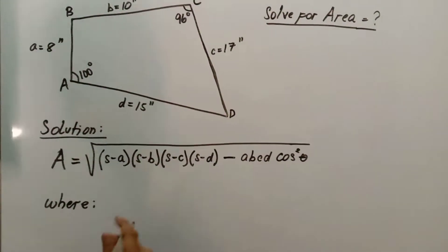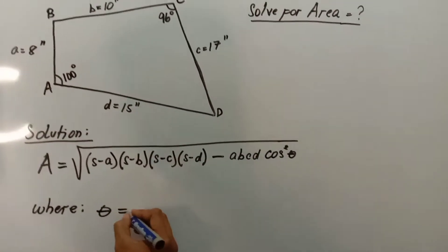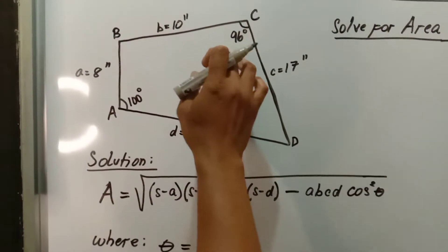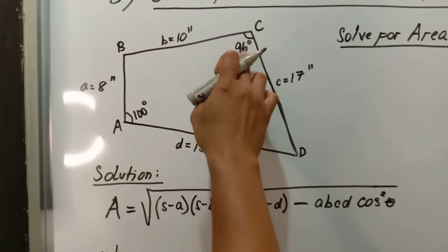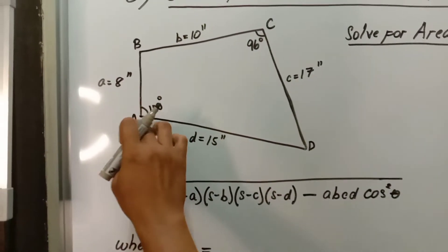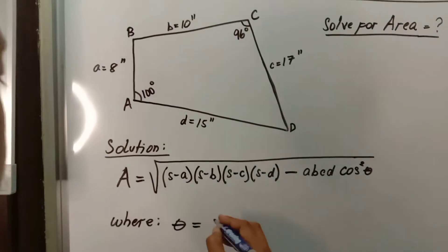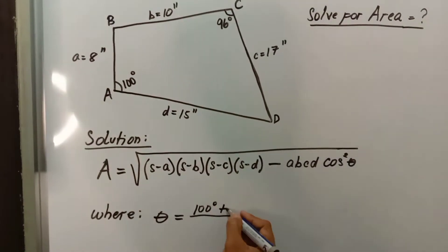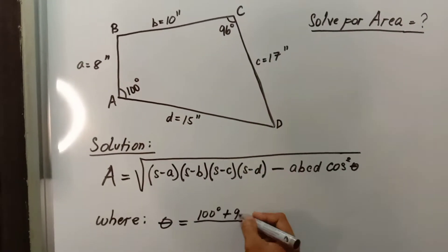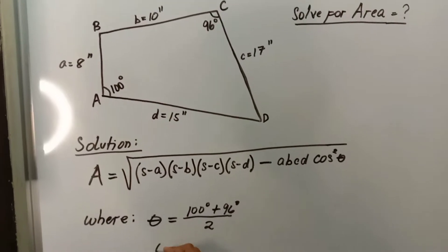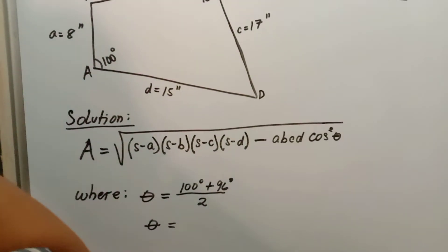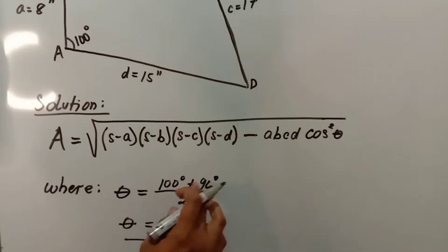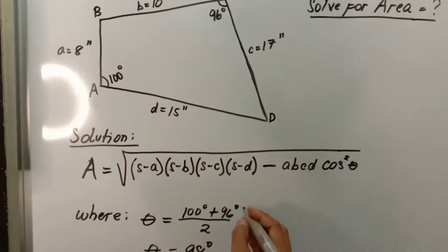In this formula, theta is equal to the sum of the two opposite included angles divided by two. For this problem, we have 96 degrees for angle C and 100 degrees for angle A. So theta = (100 + 96) / 2 = 98 degrees.